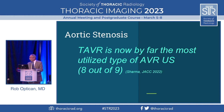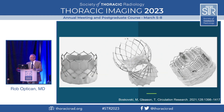TAVR is now by far the most utilized type of aortic valve replacement in the United States — eight out of nine aortic valve replacements done today in the U.S. are TAVRs. The most common categories of TAVRs include the Sapien, made by Edwards, which is balloon expandable; the CoreValve in the middle, made by Medtronic, which is self-expanding; and the Lotus valve, which has been recalled recently, which was mechanically expanding.